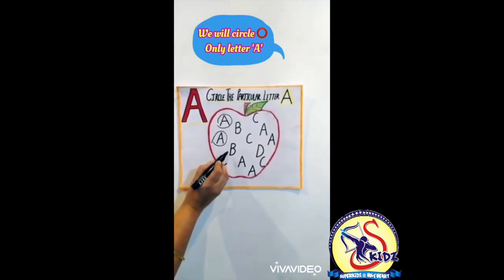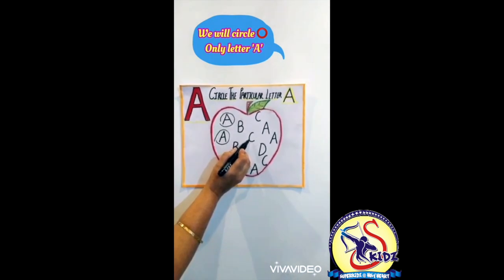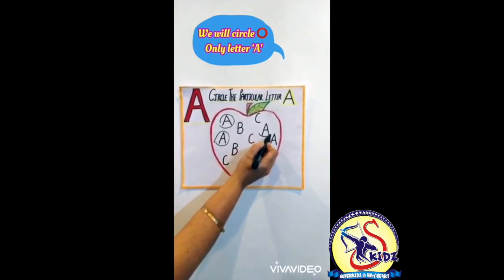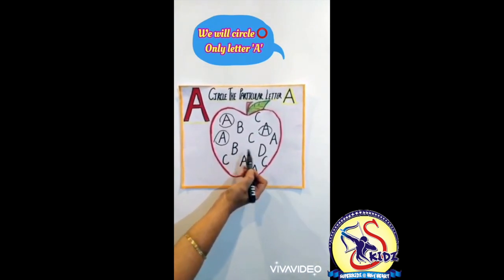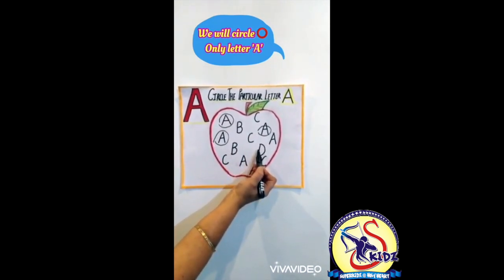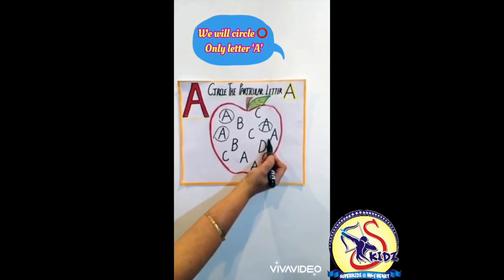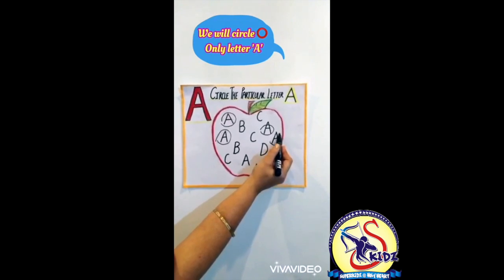Is this letter A? No. Is this letter A? No. Is this letter A? Yes. Let's circle it. Is this letter A? No. Is this letter A? No. Is this letter A? Yes. Let's circle it.